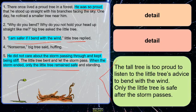When we paraphrase the story, you can paraphrase it like this: 'The tall tree is too proud to listen to the little tree's advice to bend with the wind. Only the little tree is safe after the storm passes.' See how we have changed the words but maintained the meaning?